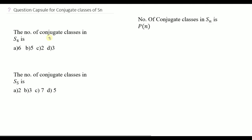Let G be any group. We take a, b belonging to G. We define a relation: a is related to b, which implies there exists a c belonging to G such that a equals c⁻¹bc. So we define one relation: a related to b satisfying this condition.